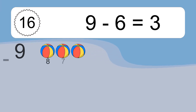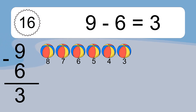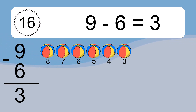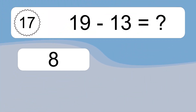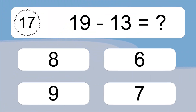9 minus 6 equals what? 9 minus 6 equals 3. Let's count it: 8, 7, 6, 5, 4, 3.